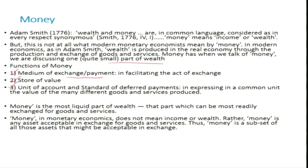Among all assets, the most liquid asset is money. The demand for money is therefore also called the demand for liquidity preference, meaning people holding more money. In monetary economics, money does not mean income or wealth — that is the main takeaway. Rather, money is any asset acceptable in exchange for goods and services; it is a subset of all assets that might be acceptable in exchange.